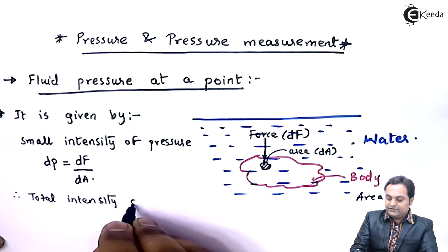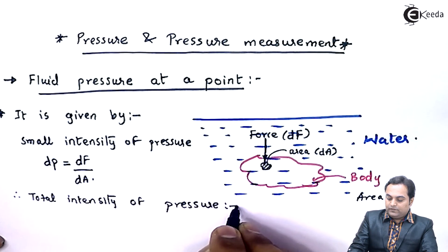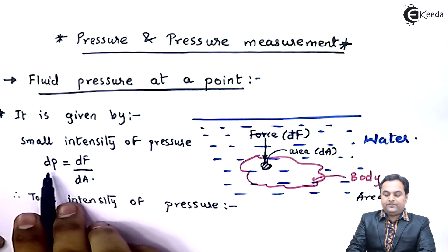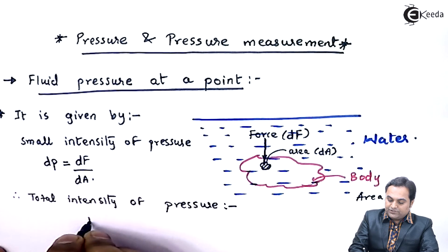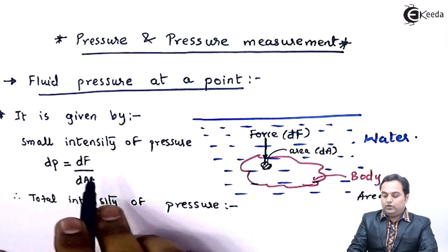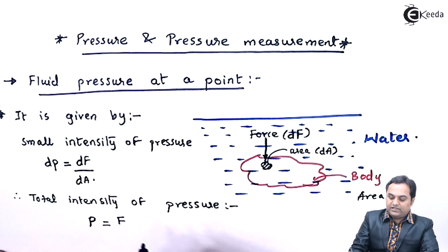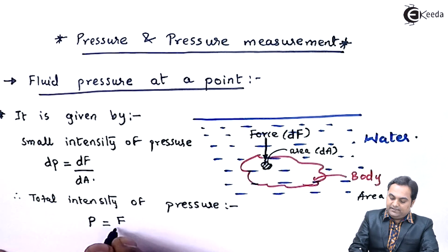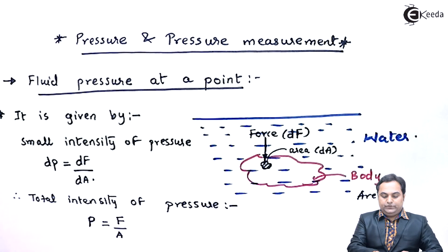Total intensity of pressure will be given by, instead of dp that is small pressure, here I would be having the total pressure P equals F upon A. Instead of small force acting on small area, here I would be having a larger force acting on the total area denoted by letter A. So here I have the formula of intensity of pressure.